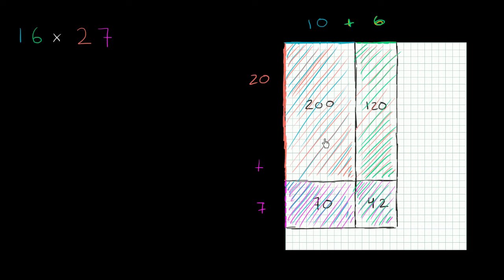So what's the area of this entire thing going to be? Well, it's going to be 200 plus 120 plus 70 plus 42. And when you add that up, you get, let's see, in the ones place you get a 2. Then you get 2 tens plus 7 tens is 9 tens plus 4 tens is 13 tens, which is the same thing as 3 tens and 100. And then this is a 4. So this is 432.